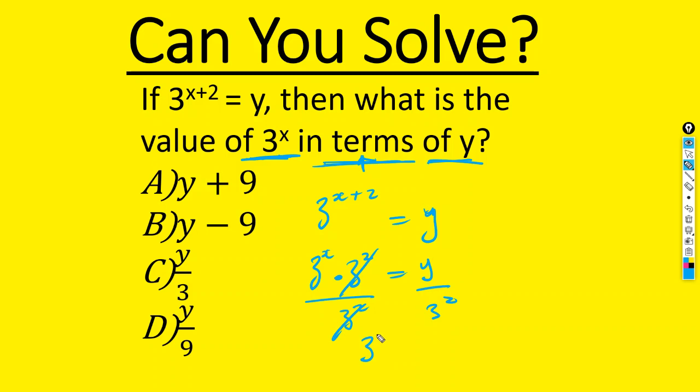You are left with 3^x equal to what? Y. And what is 3 raised to the power 2? That is 3 times 3, which gives us 9. So the value of 3^x in terms of y is y over 9. And our right answer here is D.